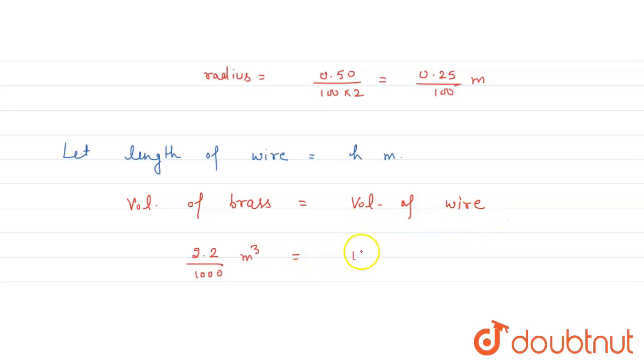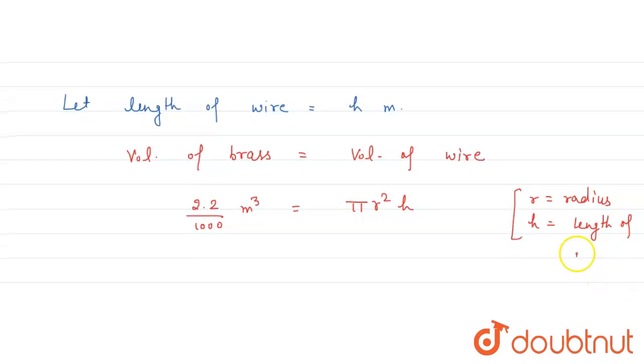Which is equal to pi r squared h, where r is the radius and h is the length of wire.